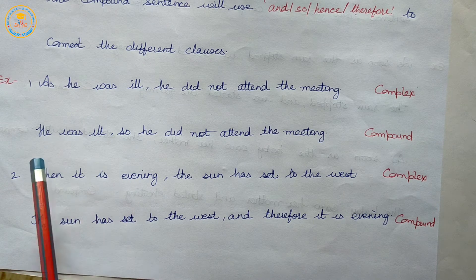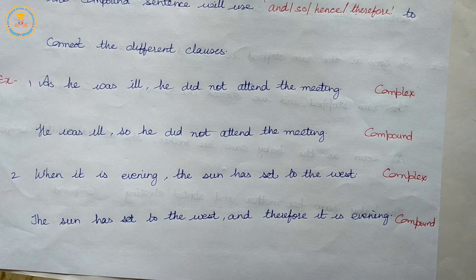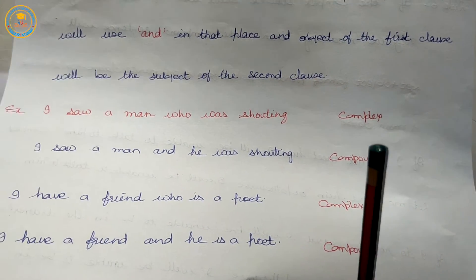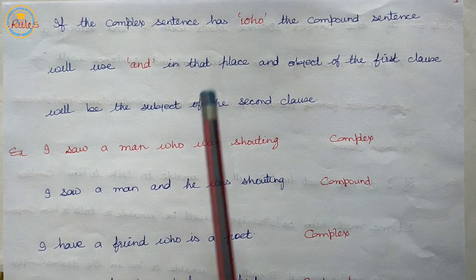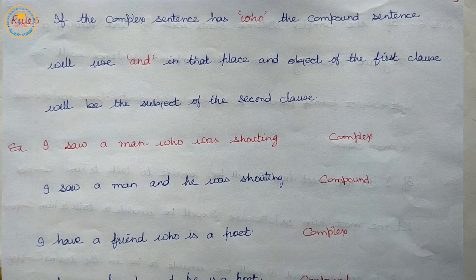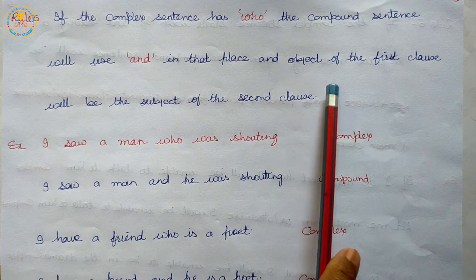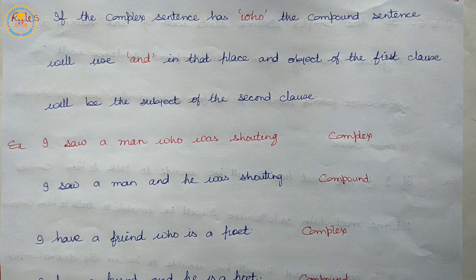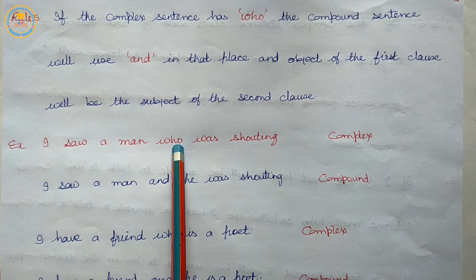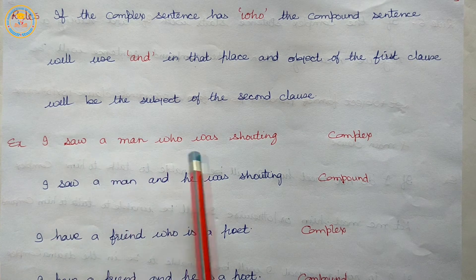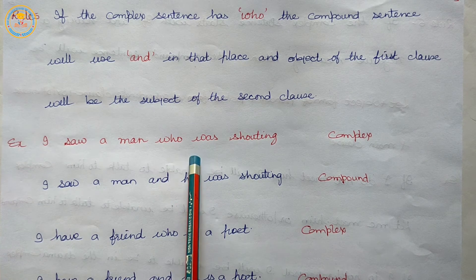Rule five: if the complex sentence has 'who', the compound sentence will use 'and' in place of 'who'. Additionally, the object of the first clause will become the subject of the second clause.